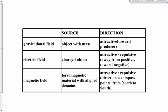A quick comparison of our three fields: the source of a gravitational field is mass; the source of an electric field is charge; the source of a magnetic field is a magnet — a ferromagnetic material with aligned domains. A gravitational field is always attractive toward the producer. Electric and magnetic fields can be attractive or repulsive. Electric field points away from positive and toward negative; magnetic field points away from the north pole and toward the south pole.